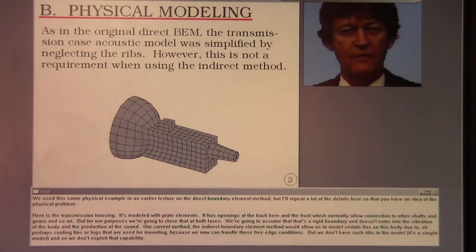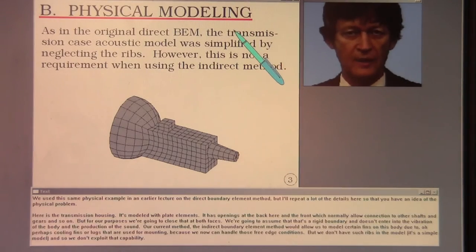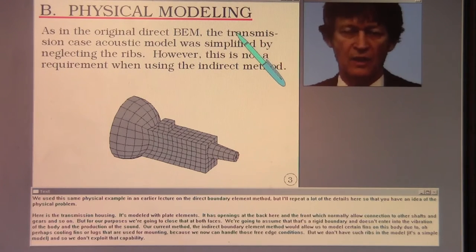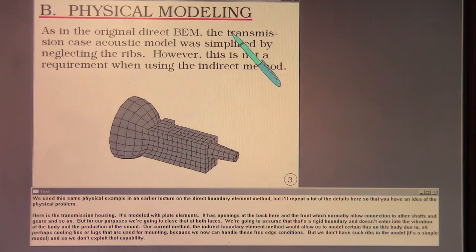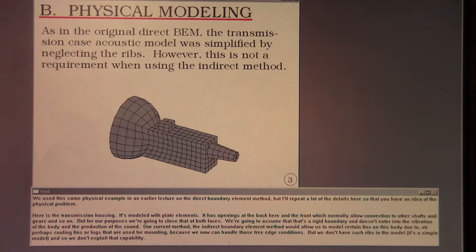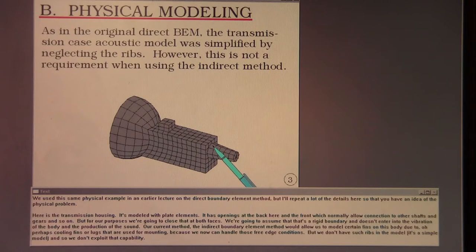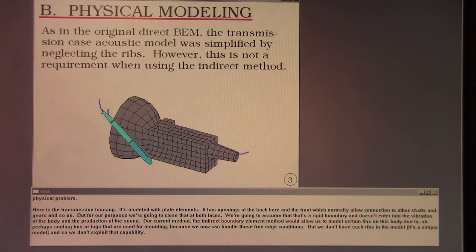We use this same physical example in an earlier lecture on the direct boundary element method, but I'll repeat a lot of the details here so that you have an idea of the physical problem. Here is the transmission housing. It's modeled with plate elements. It has openings at the back and the front which normally allow connection to other shafts and gears, but for our purposes we're going to close that at both faces. We're going to assume that's a rigid boundary and doesn't enter into the vibration of the body and the production of the sound.